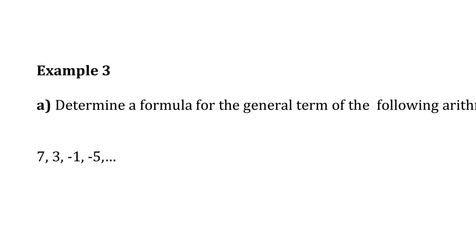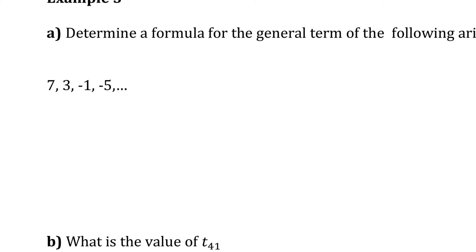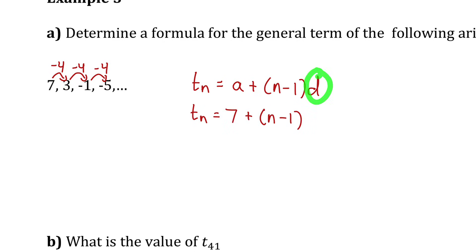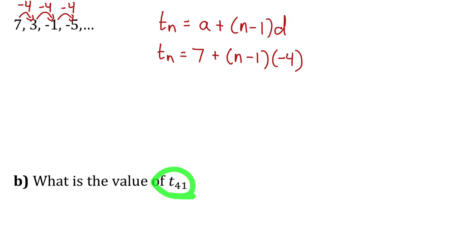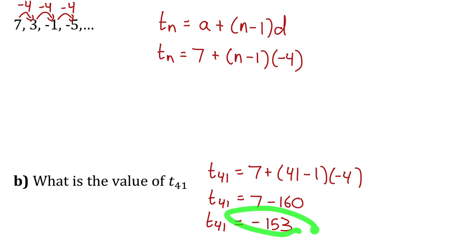Let's look at that second sequence: 7, 3, negative 1, negative 5. The common difference is negative 4 — to get from one number to the next, you subtract 4. Writing the formula for the general term using Tn = a + (n-1)d, I substitute a equals 7 and d equals negative 4. To find the 41st term, I substitute 41 for n: that gives 40 times negative 4, which is negative 160. Adding 7, the 41st term is negative 153.